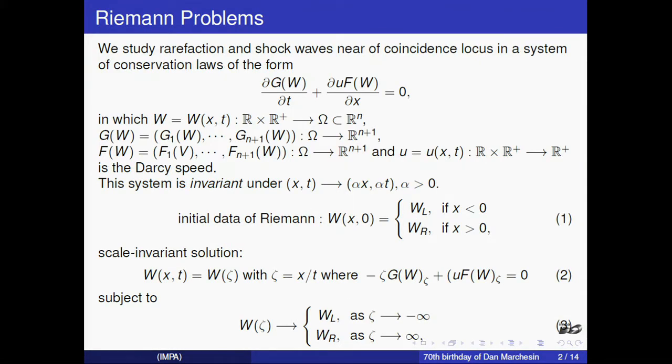We consider this general system of conservation laws with the particularity that u appears only in the flux and the accumulation does not depend on u. In this case, this system is invariant for this deformation. We solve the Riemann problem. So we have a continuous solution that satisfies the involved problem with this condition.